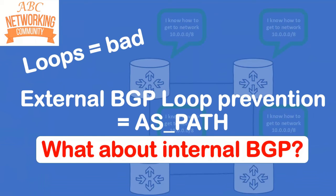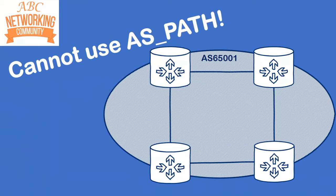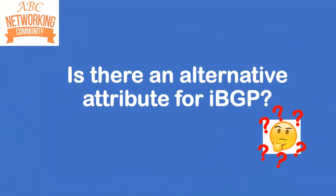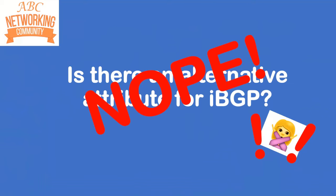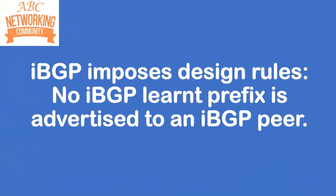But what about internal BGP? Have a look at this diagram — we've got four nodes, they're all in the same AS. We can't use AS path because all of the devices are within the same AS, so if they were going to block based upon an AS, they would never receive each other's routes. Is there an alternative BGP attribute for IBGP that prevents loops like eBGP uses AS path? The answer is no — there isn't another attribute which IBGP uses.